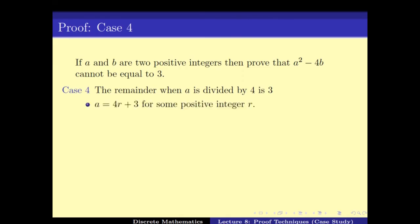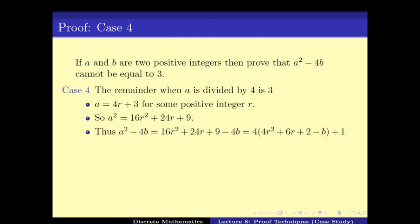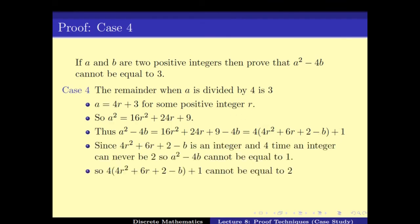Case 4: A = 4R + 3, so A² = 16R² + 24R + 9. Breaking 9 as 8 + 1, we get A² - 4B = 4(4R² + 6R + 2 - B) + 1. This is again 4 times an integer plus 1, and hence cannot equal 2.